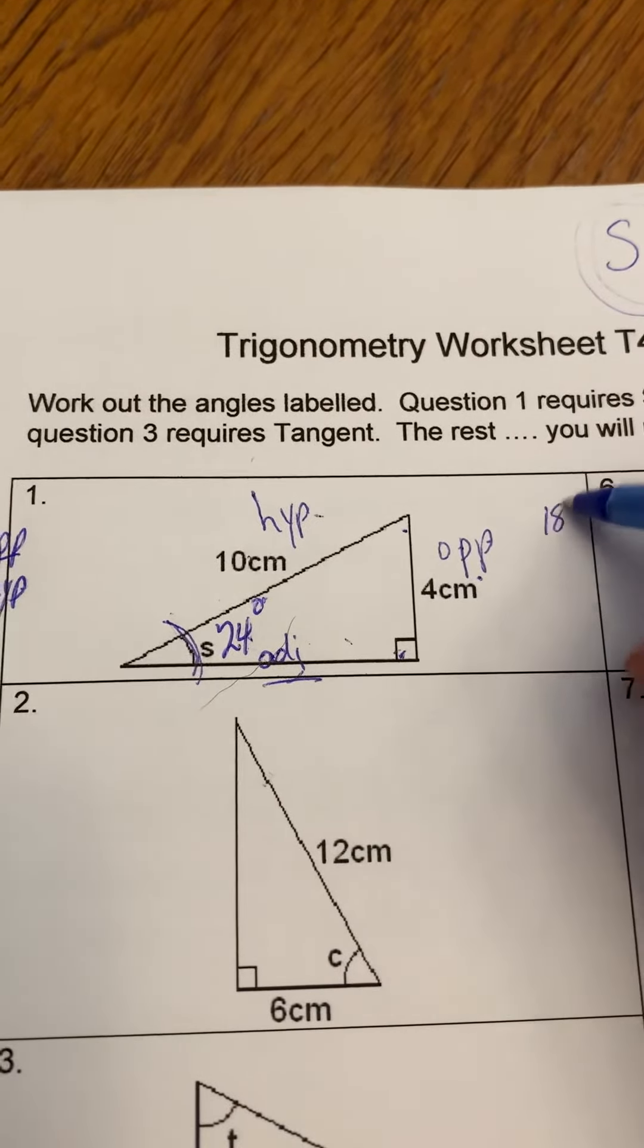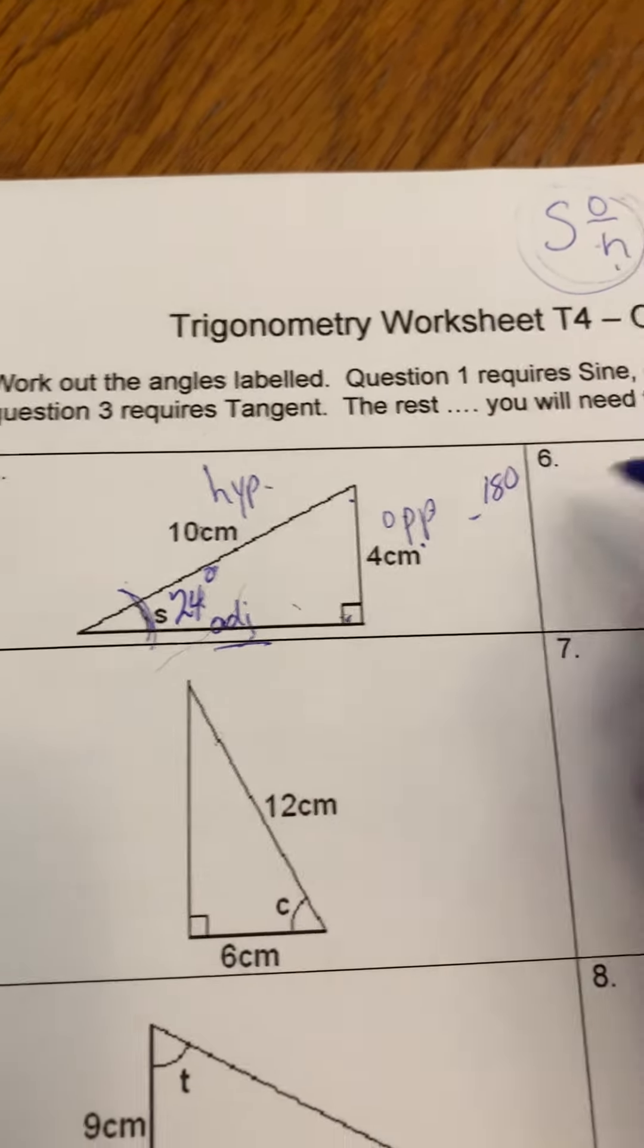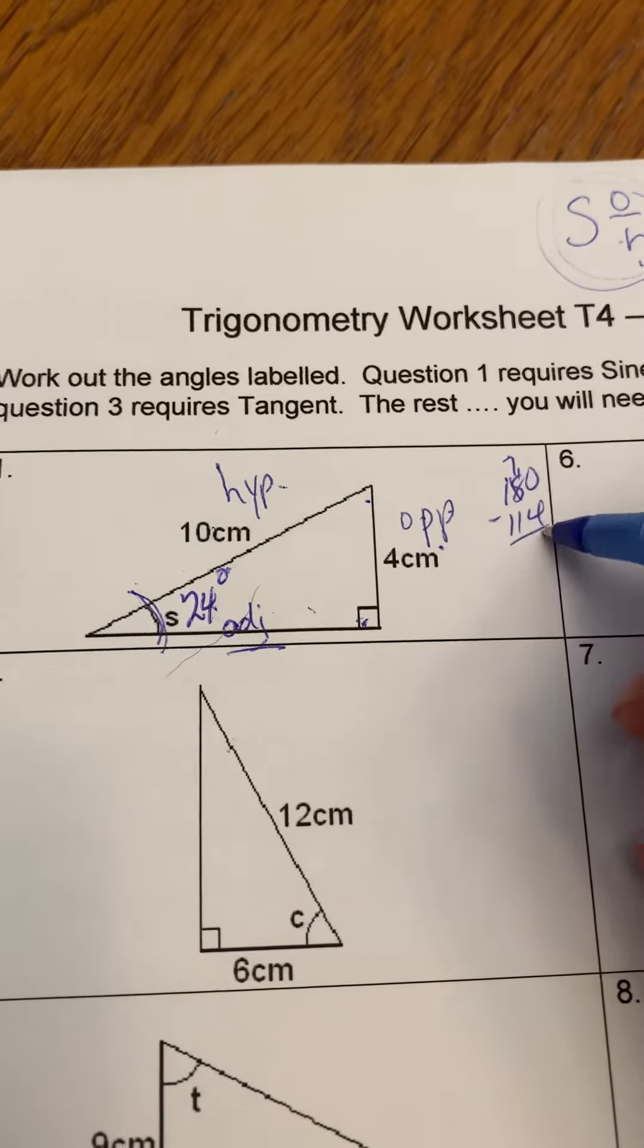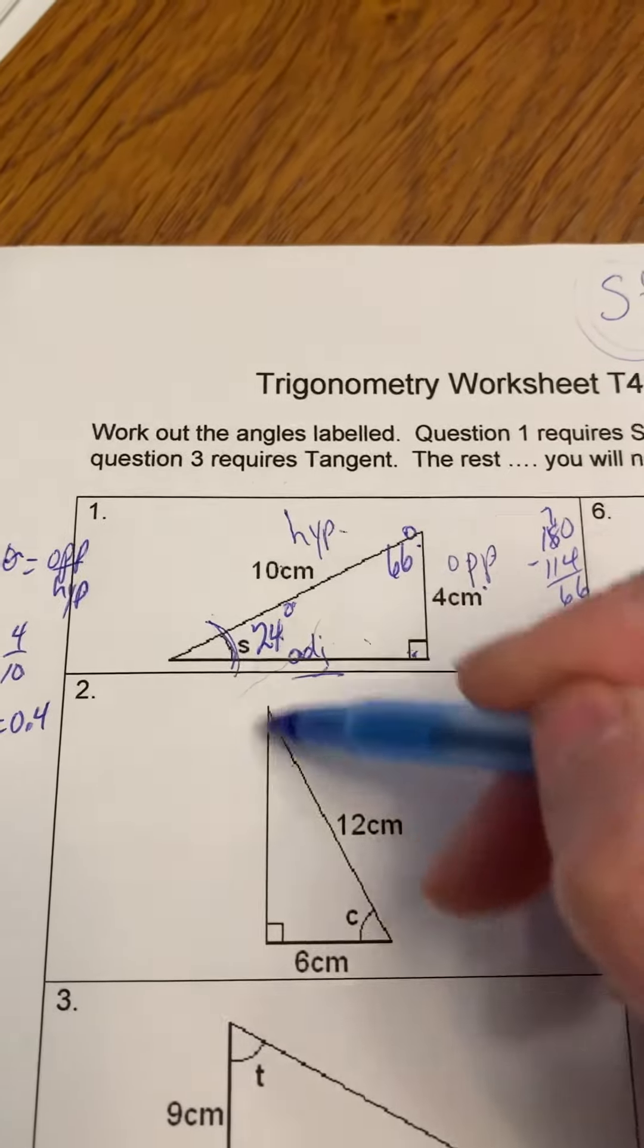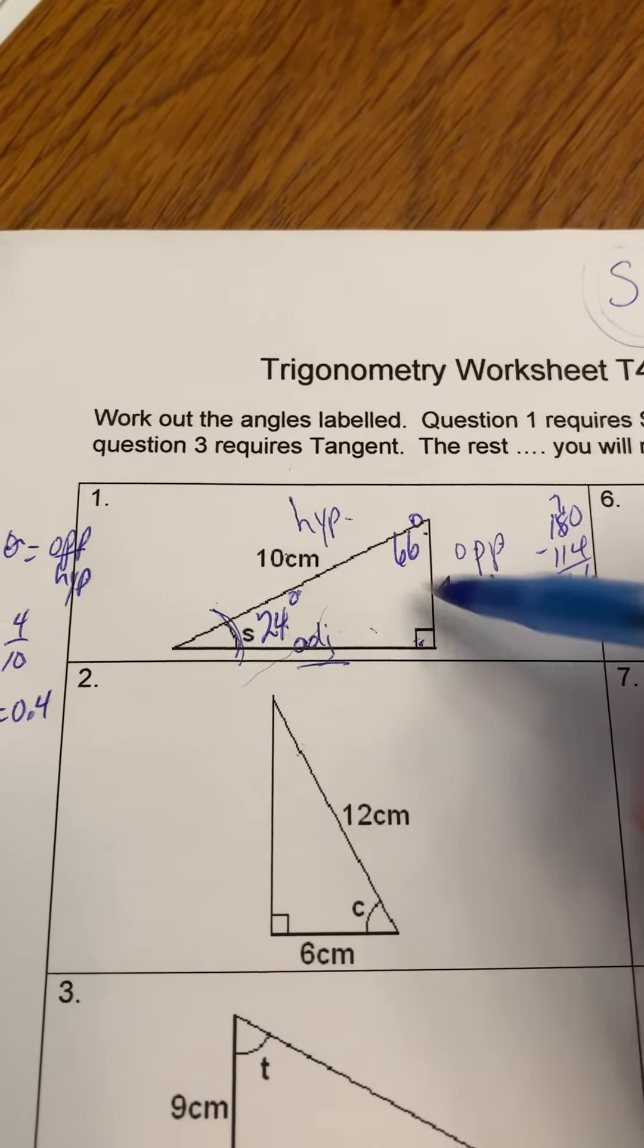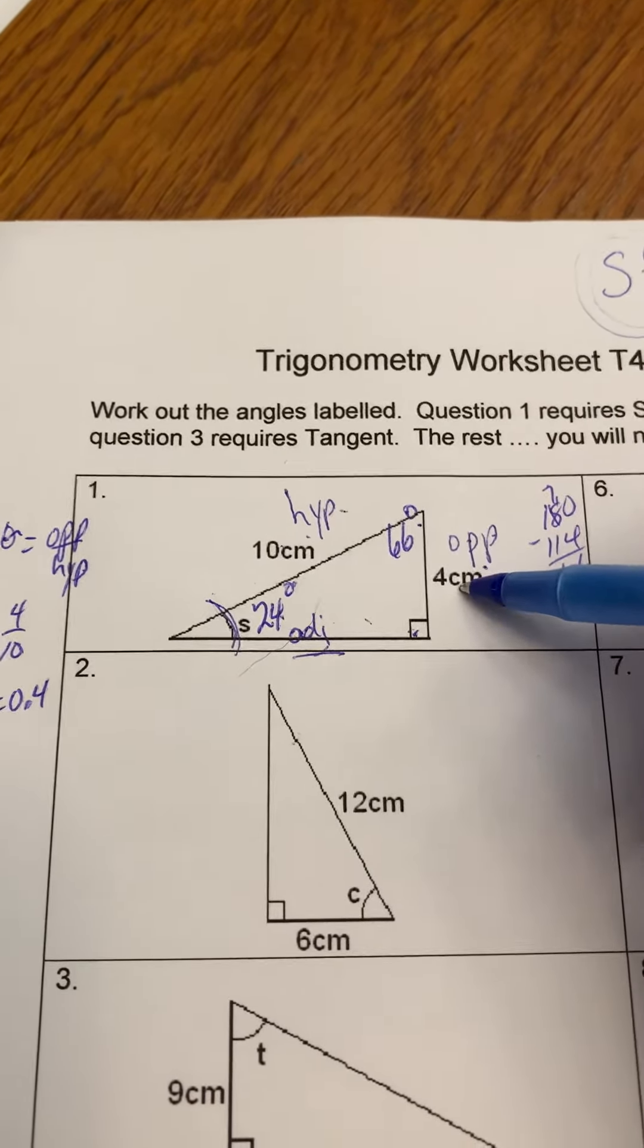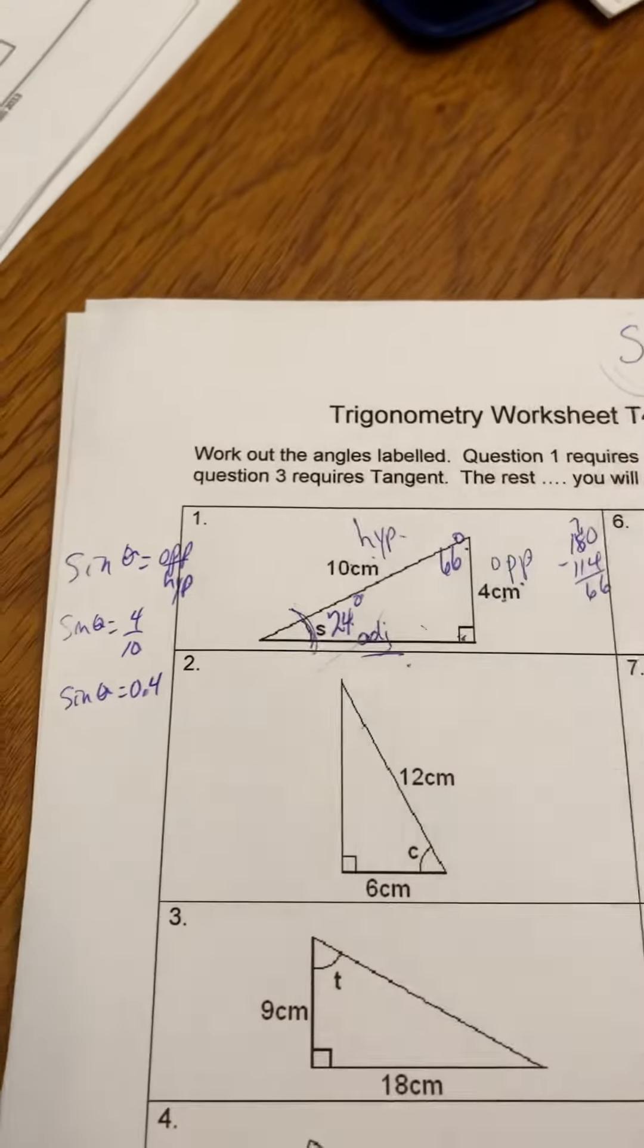So you could tell me what this angle is by going 180 minus 114, and this is a 66 degree angle. And then you could use the Pythagorean theorem if you wanted: c squared is equal to a squared plus b squared, and you could solve for that. So that's what we're looking for at the very end of all this.